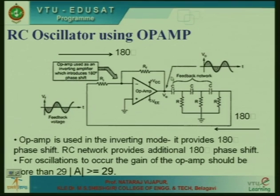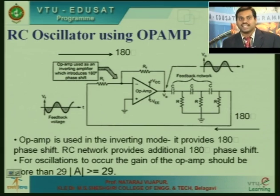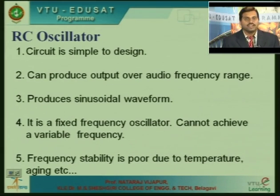It is an inverting amplifier. The feedback network generates output which is fed back as input to the op-amp, which is amplified and again applied to the feedback network. One noise voltage which undergoes 360 degrees phase shift will survive and be amplified, taking the form of sinusoidal oscillations. The gain of the op-amp should be greater than 29, and the frequency of generated oscillations is 1/(2πRC√6).